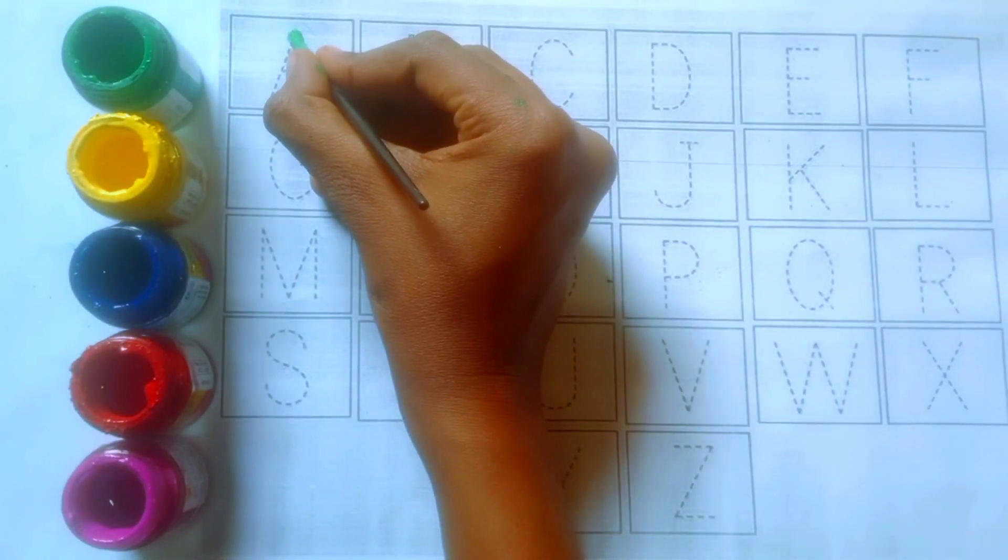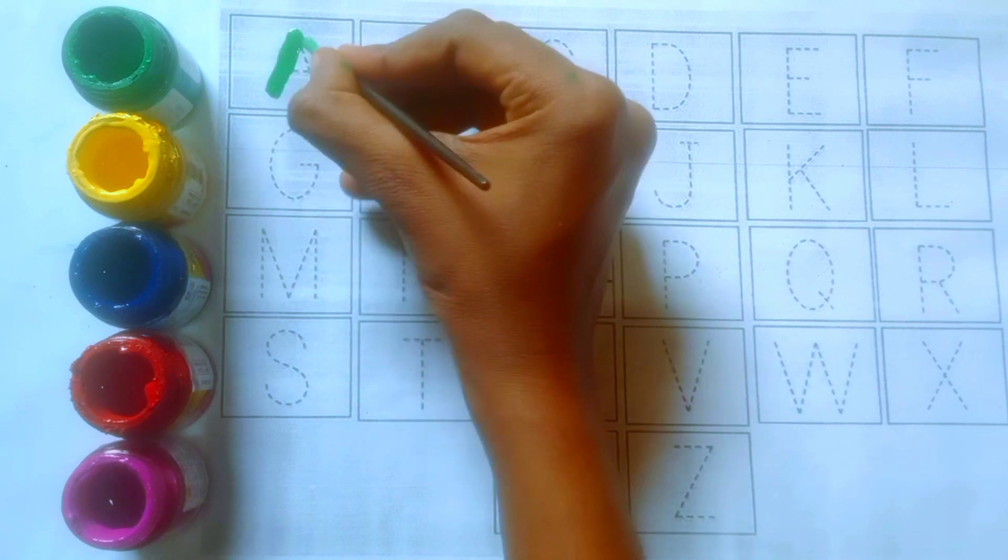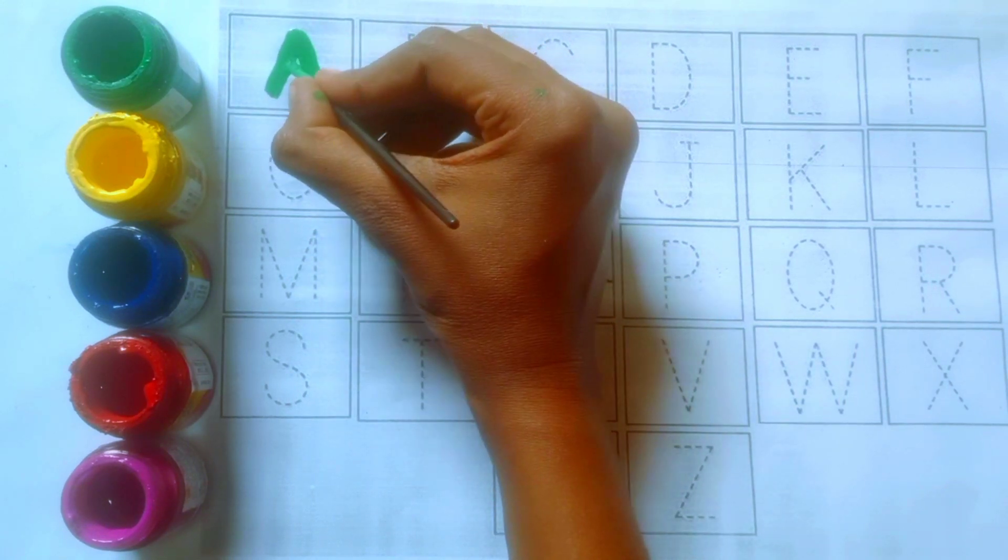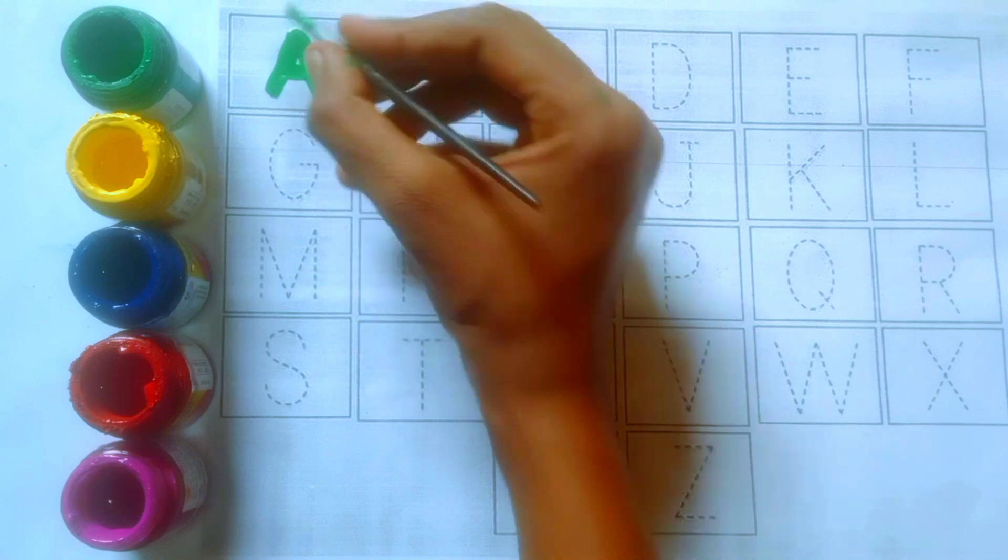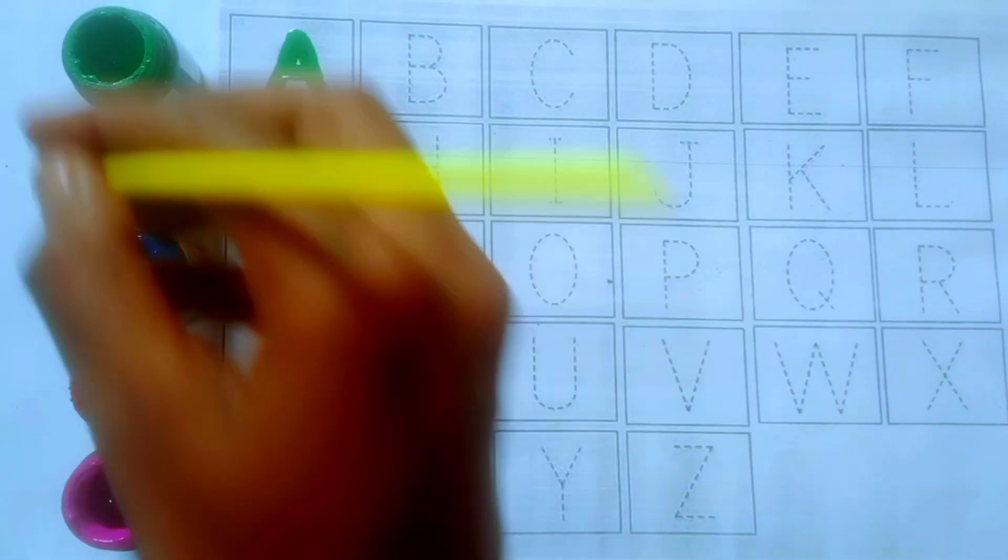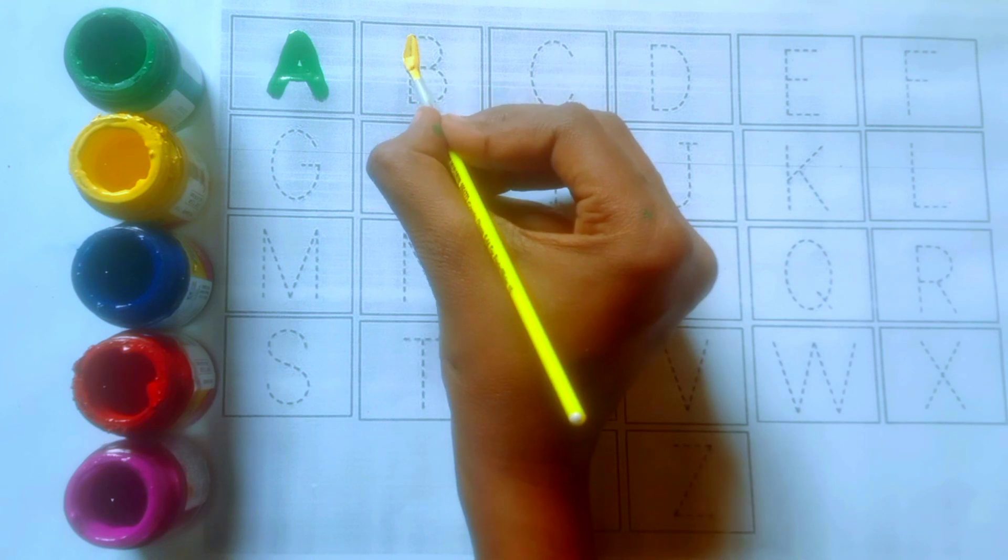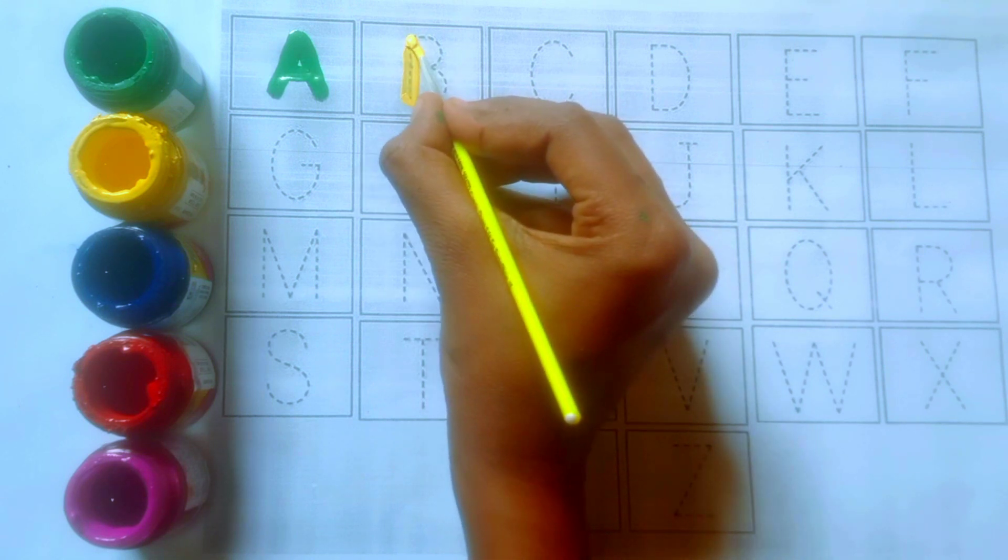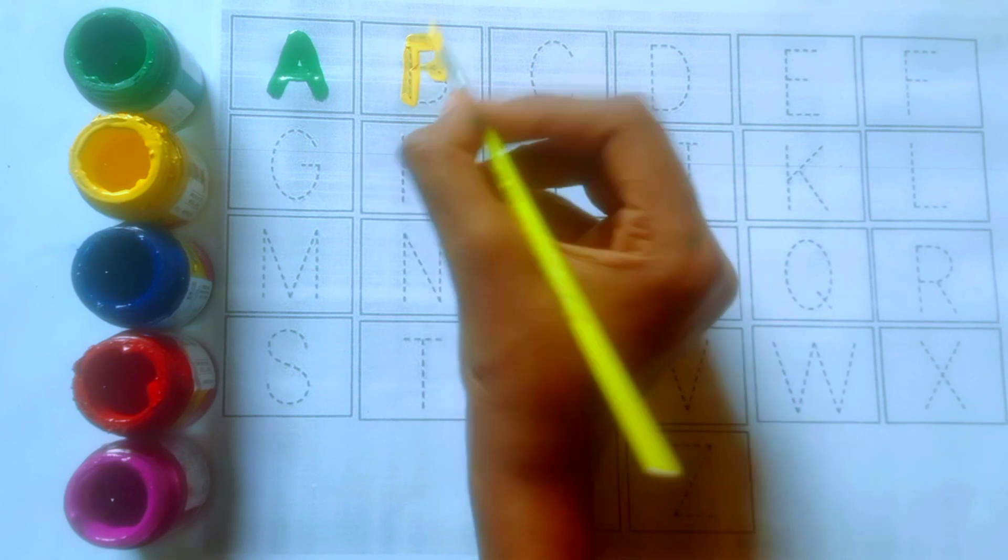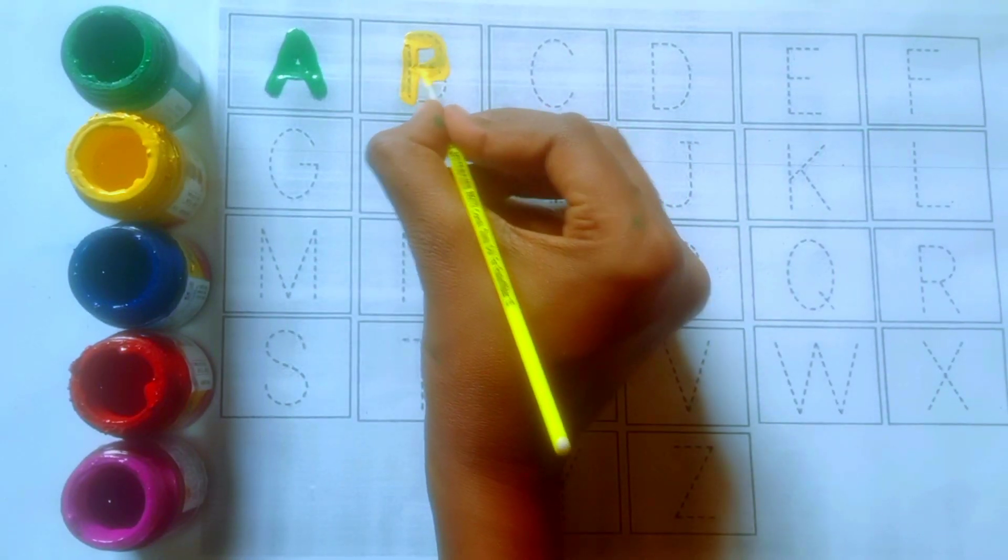Green colors. A, A for apple. Yellow colors. B, B for ball.